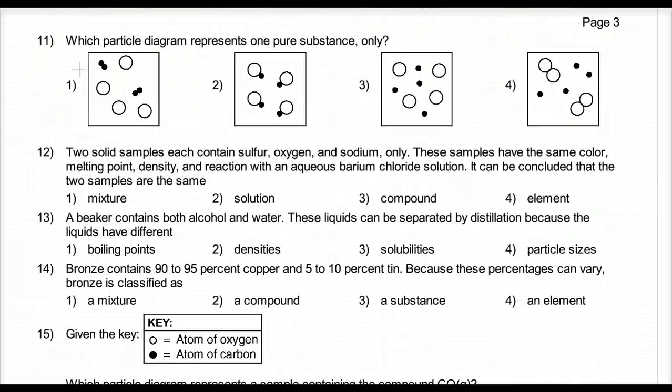Number eleven. Which particle diagram represents only one pure substance? Only one. Not a mixture. Mixtures are not pure substances. So this is a mixture of elements. Mixture of elements. This is a compound. So two is a compound. Only one substance. Here is an element. Two different types of elements. Two is the answer.